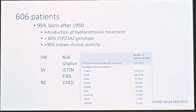We virtually vacuum-cleaned all of Sweden for patients we could find through the screening, follow-up, and genotyping, ending up with a little more than 600 patients. We then cross-checked this against the diagnosis registry in Sweden and found another 30, making it a pretty complete cohort.